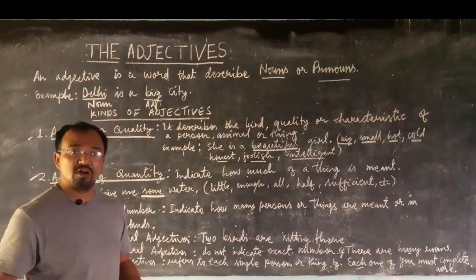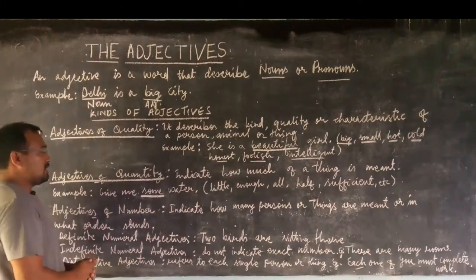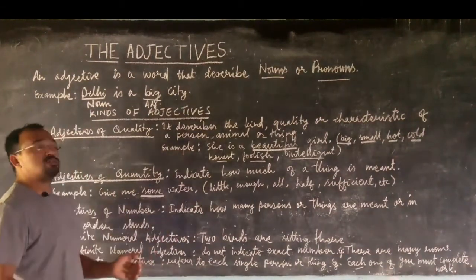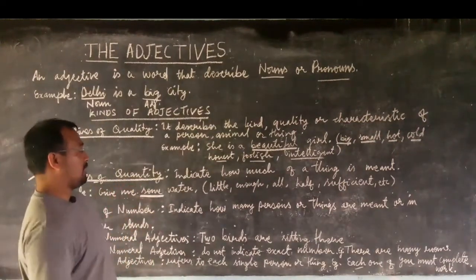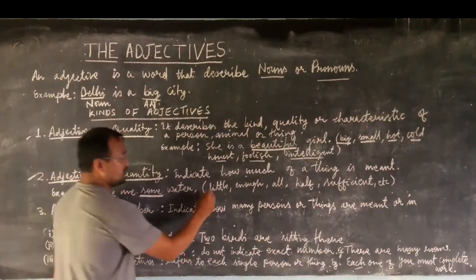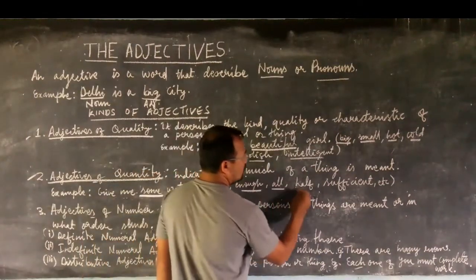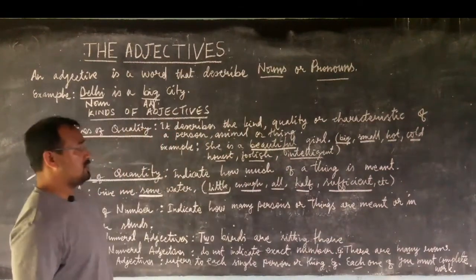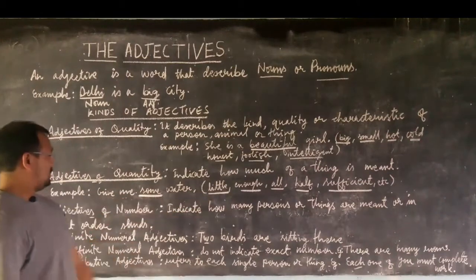In the example 'Give me some water,' the exact amount is not mentioned — only 'some' — so it indicates the quantity of water being asked for. Other adjectives of quantity include: little, enough, all, half, sufficient, and so on. There are various other such words.